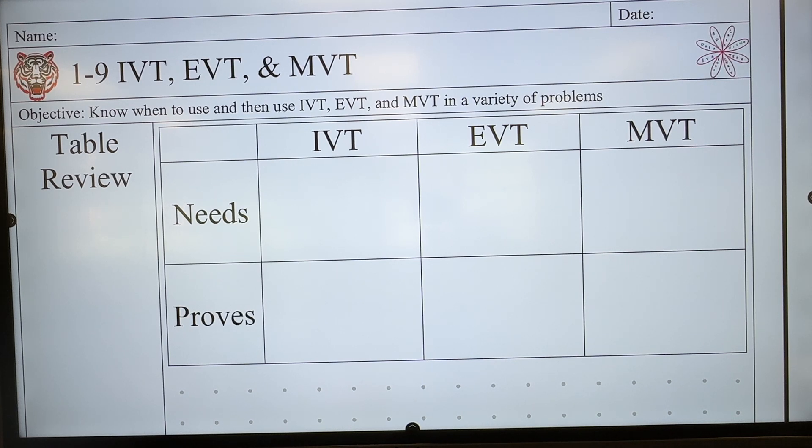Giorgio, IVT, it needs one thing. To be continuous. And Giorgio also, what does it prove? What one word does it prove? Height. Done. It proves heights. That's as simple as we can make it. If continuous, then it proves heights.